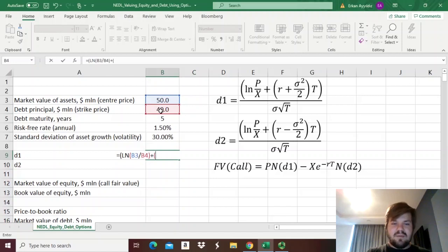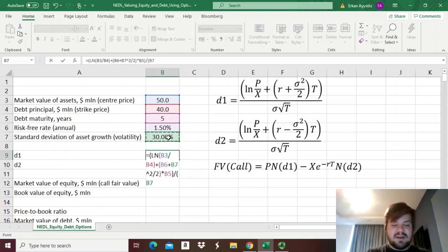plus, open brackets, the risk-free rate, times volatility, squared, divided by 2, all of it, times maturity in years, and then we need to divide that by volatility not squared, times the square root of the maturity period.